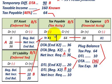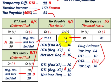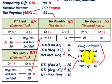Those amounts feed into our tax expense calculation. The deferred tax liability increase of $10,000 increases our tax payable credit amount of $64,000, and the deferred tax asset increase of $36,000 is a debit that reduces our tax payable of $64,000.